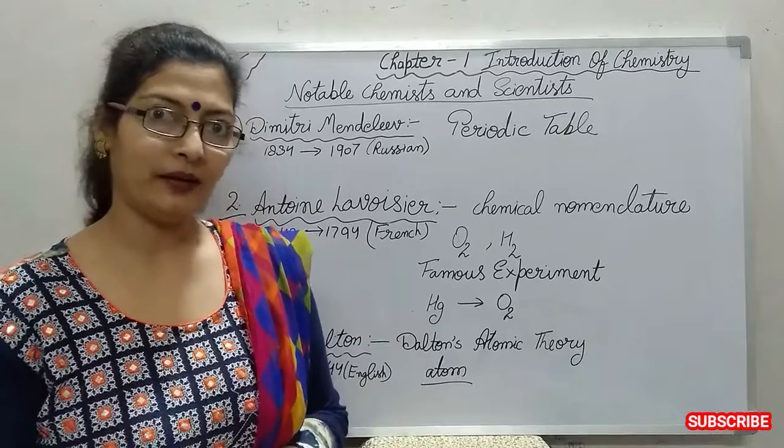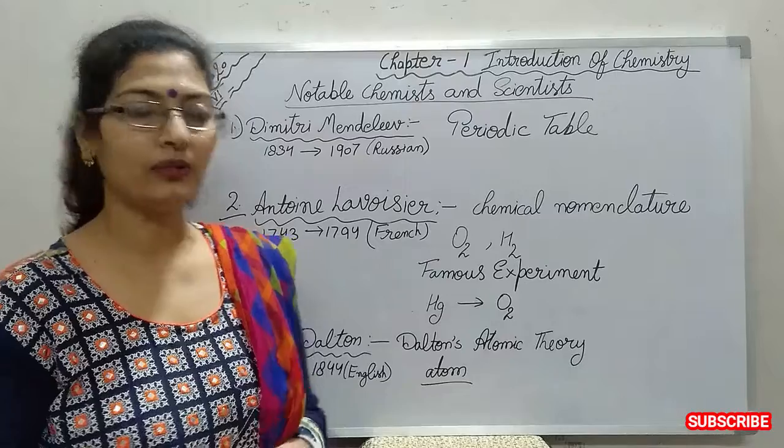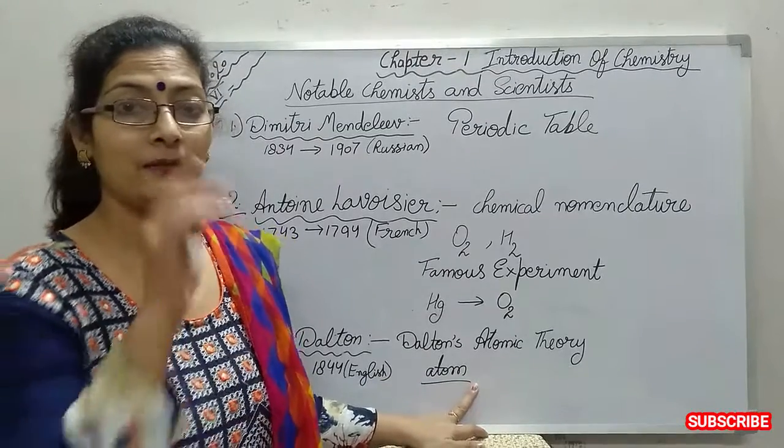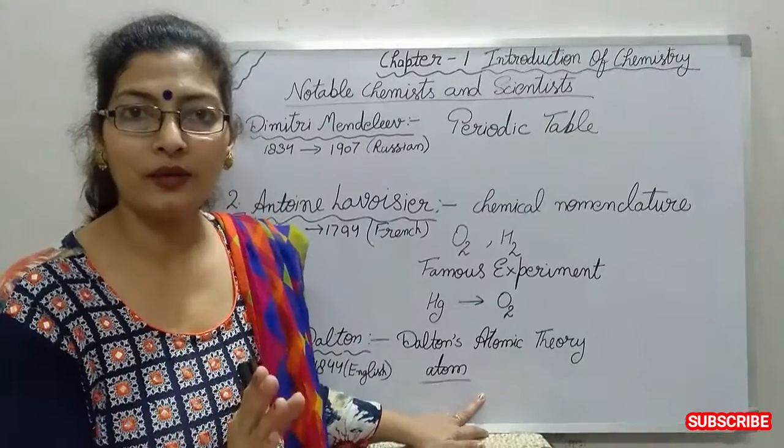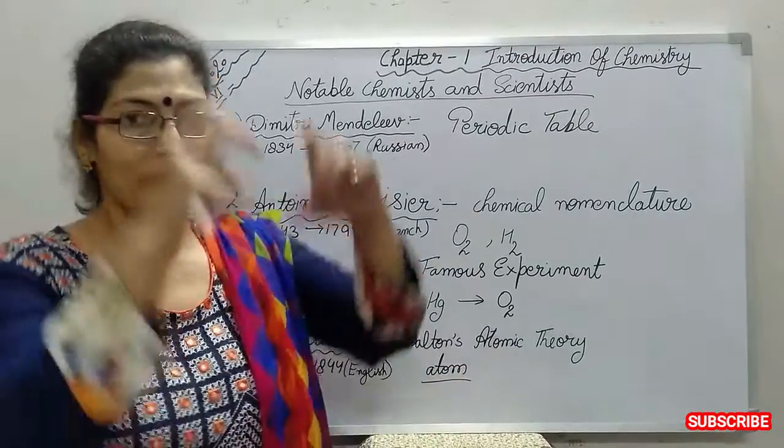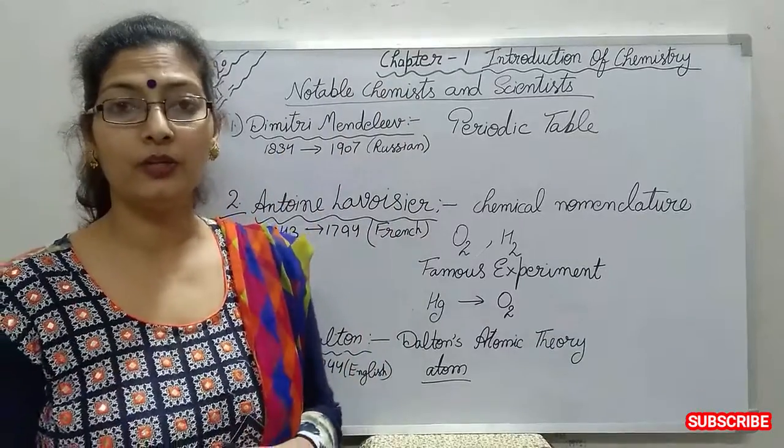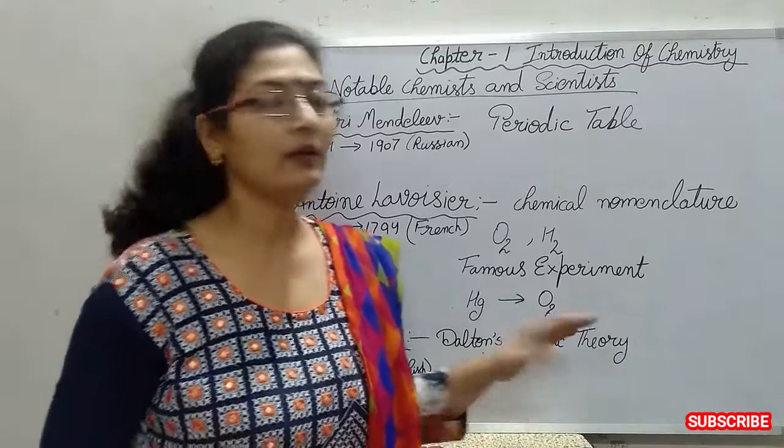He said that all matter is made up of the smallest unit called the atom. He said this is indestructible, meaning it neither can be created nor destroyed. There are so many parts of that theory, and it is called Dalton's atomic theory.